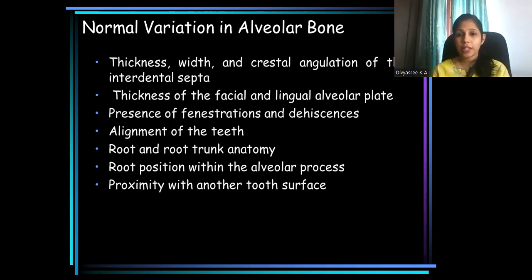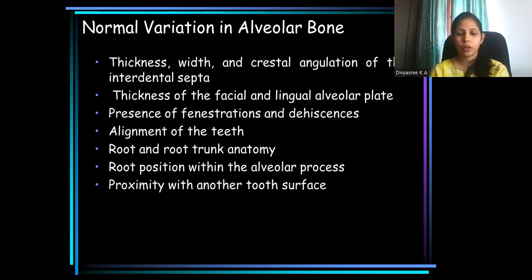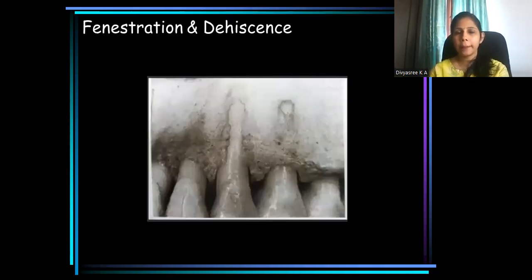Fenestrations and dehiscences, alignment of teeth, root trunk and root anatomy, position of the root within the alveolar process, and the proximity of a particular tooth with the adjacent tooth — all these factors can influence alveolar bone destruction patterns.